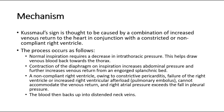For its mechanism, Kussmaul's sign is thought to be caused by a combination of increased venous return to the heart, in conjunction with a constricted or non-compliant right ventricle. The process occurs as follows. Normal inspiration requires a decrease in intrathoracic pressure, which helps draw venous blood back towards the thorax. Contraction of the diaphragm on inspiration increases abdominal pressure, and further increases venous return from an engorged splanchnic bed.